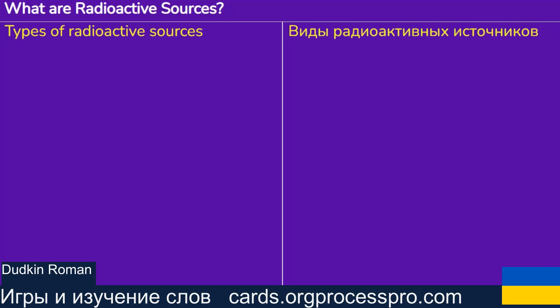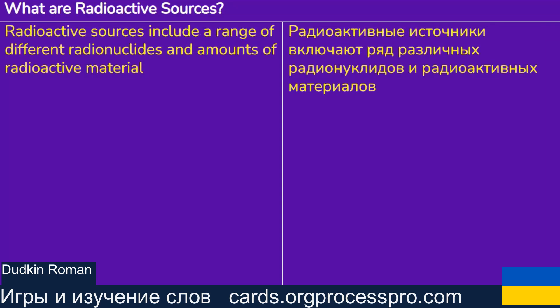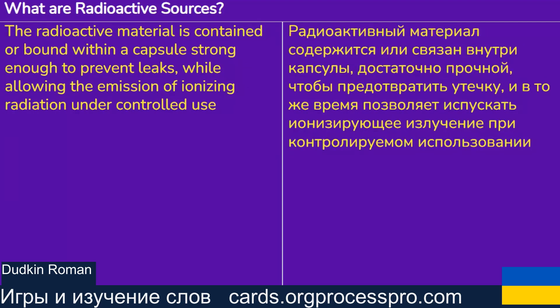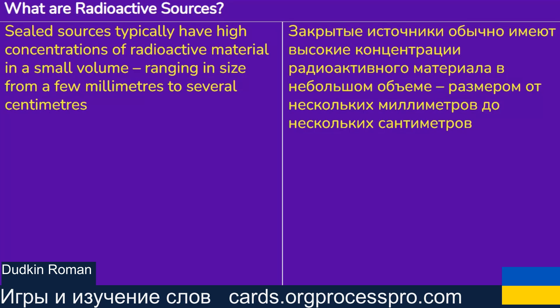Types of radioactive sources: Radioactive sources include a range of different radionuclides and amounts of radioactive material. A sealed source is a radioactive source in which the radioactive material is permanently sealed in a capsule or closely bonded in a solid form. The radioactive material is contained within a capsule strong enough to prevent leaks, while allowing the emission of ionizing radiation under controlled use. Sealed sources typically have high concentrations of radioactive material in a small volume, ranging in size from a few millimetres to several centimetres.